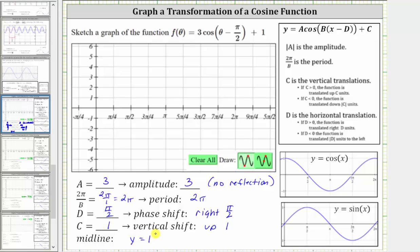To graph the function, let's first graph the midline, which is y = 1. Because the amplitude is 3, the maximum cosine function value is 1 + 3 = 4, and the minimum is 1 - 3 = -2.